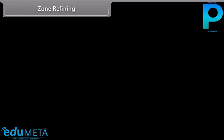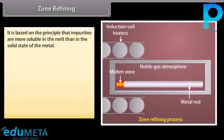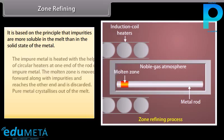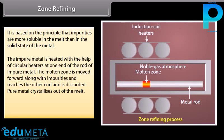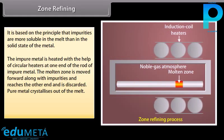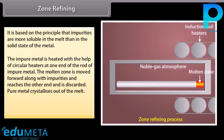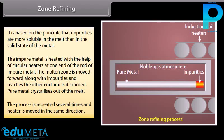Zone refining: This is based on the principle that impurities are more soluble in the melt than in the solid state of the metal. The impure metal is heated with circular heaters at one end of a rod. The molten zone moves forward along with impurities and reaches the other end where it is discarded. Pure metal crystallizes out of the melt. The process is repeated several times with the heater moving in the same direction. It is used for purifying semiconductors.